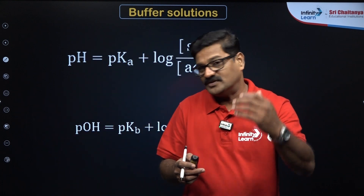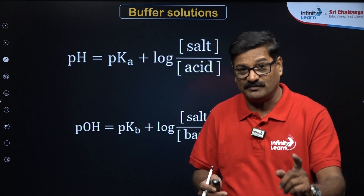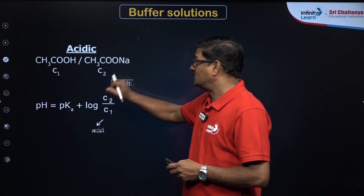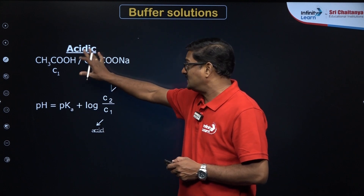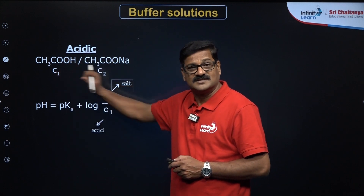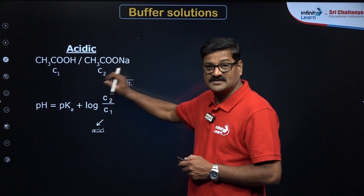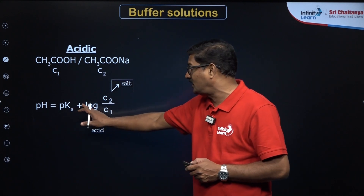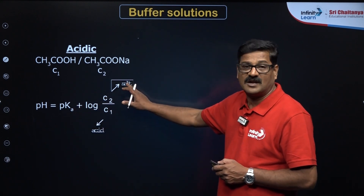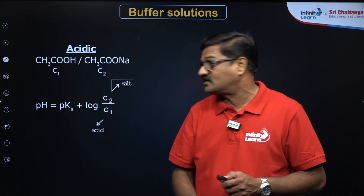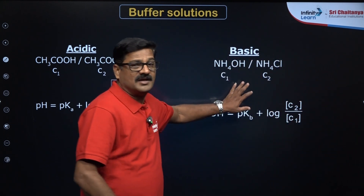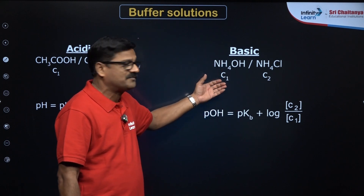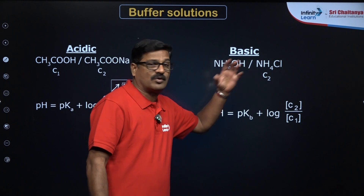How to apply the buffer concept in the NEET examination: for the acidic buffer, take acetic acid and sodium acetate. Let the concentration of acetic acid be C1 and the concentration of sodium acetate be C2. According to the Henderson-Hasselbalch equation: pH = pKa + log(C2/C1), where C2 is the salt concentration and C1 is the acid concentration. For the basic buffer — take ammonium chloride and ammonium hydroxide — the concentration of ammonium hydroxide is C1 and ammonium chloride is C2.